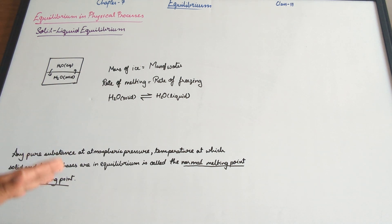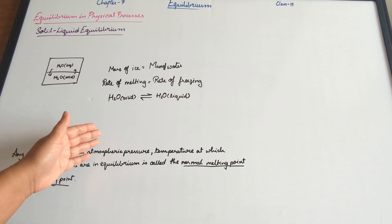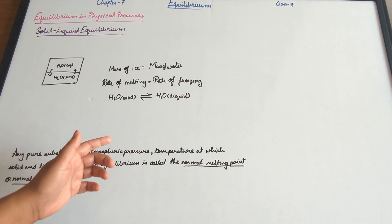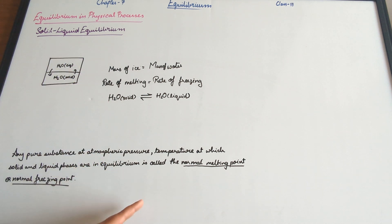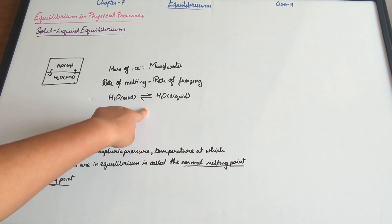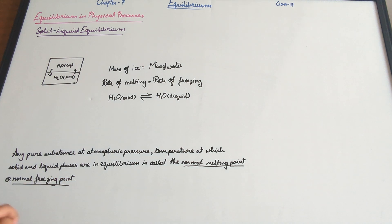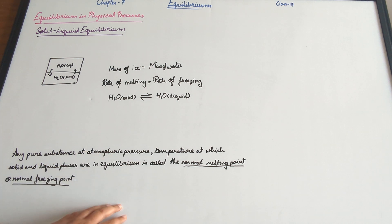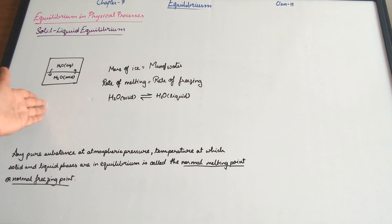When you increase temperature to about plus 10 degrees Celsius, the rate of melting will be slightly higher than the rate of freezing. When you decrease the temperature to minus 10 degrees Celsius, the rate of freezing will be higher than the rate of melting, and equilibrium is lost. The equilibrium between solid and liquid is shown as H₂O (solid) ⇌ H₂O (liquid). For any pure substance at atmospheric pressure, the temperature at which solid and liquid phases are at equilibrium is called the normal melting point or the normal freezing point — for water, that is 273 Kelvin. With that, we are done with solid-liquid equilibrium.